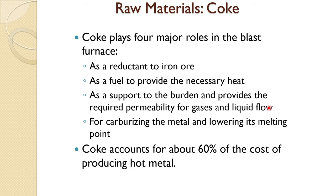Next, we come to the raw material coke — another major constituent of the blast furnace feed. Coke plays mostly four roles: as a reductant to iron ore, as a fuel to provide the necessary heat, as a support to the burden providing required permeability for gases and liquid flow, and for carburizing the metal and lowering its melting point. Pure iron has a very high melting point — more than 1500°C — but due to carburization and other impurities, it goes down to about 1200°C where it can melt. This is a very important role that carbon plays.